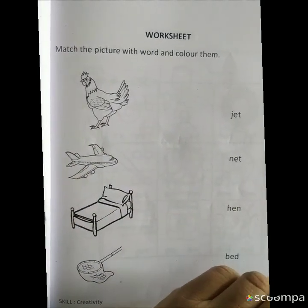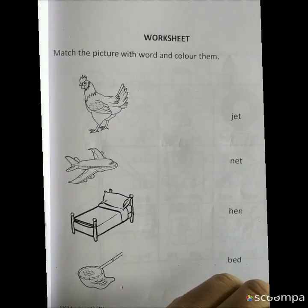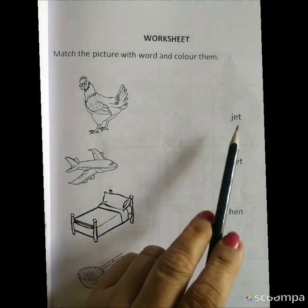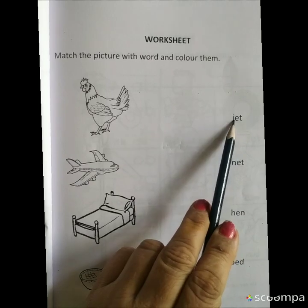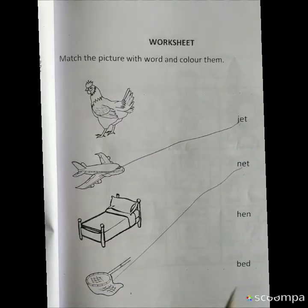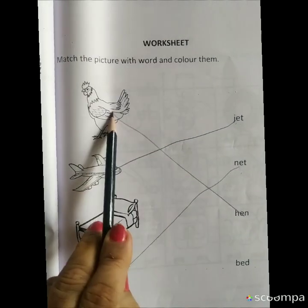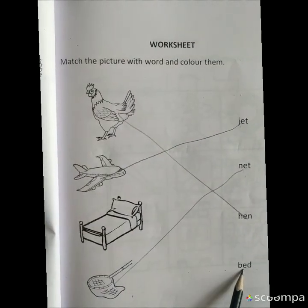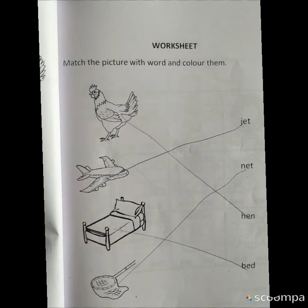I like to do the coloring. This is jet, match with jet. This is net, match with net. This is hen, match with hen. This is bed. I sleep on this bed.